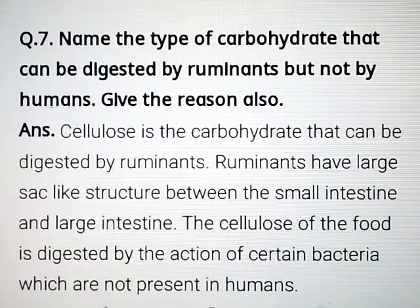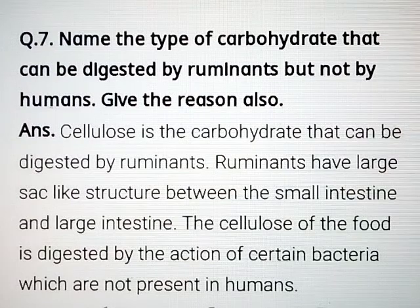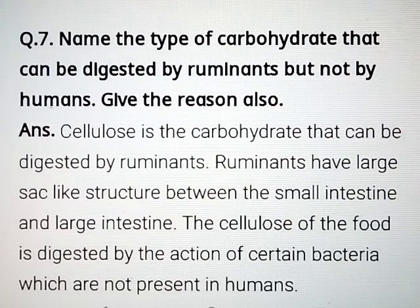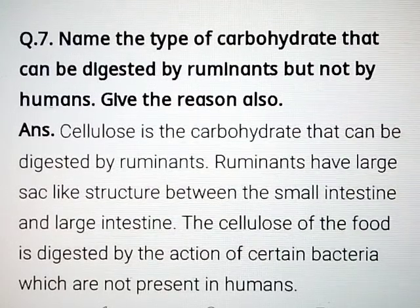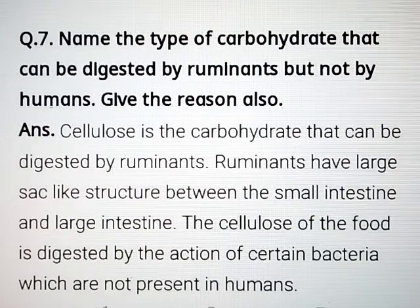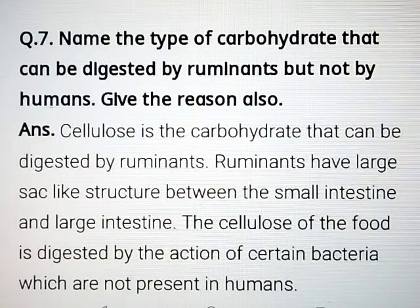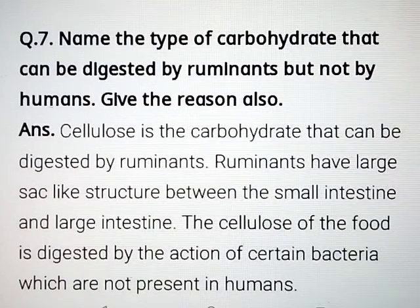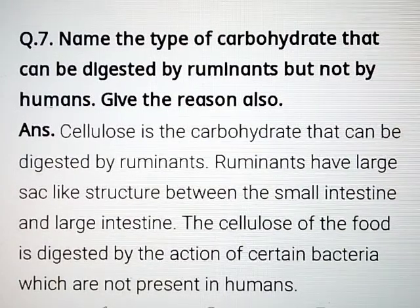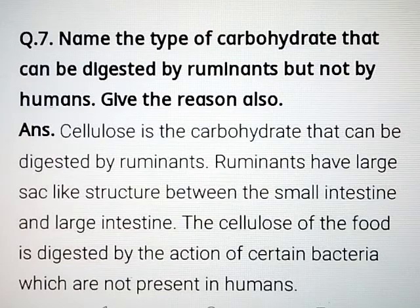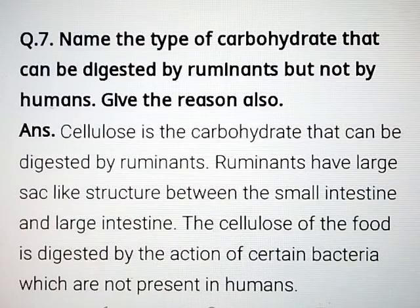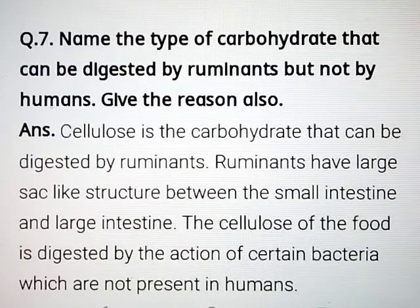Question number 7: name the type of carbohydrate that can be digested by ruminants but not by humans. Give the reason also. Cellulose is the carbohydrate that can be digested by ruminants. Ruminants have a large sac-like structure between the small intestine and large intestine. The cellulose of the food is digested by the action of certain bacteria which are not present in humans.